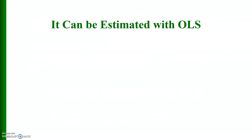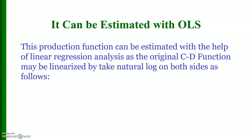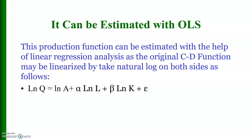The Cobb-Douglas production function can be estimated with the help of ordinary least squares simple linear regression. This production function can be estimated with linear regression analysis, as the original Cobb-Douglas function may be linearized by taking the natural log on both sides.